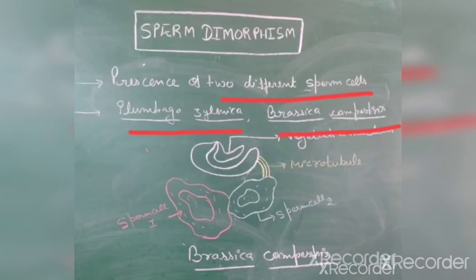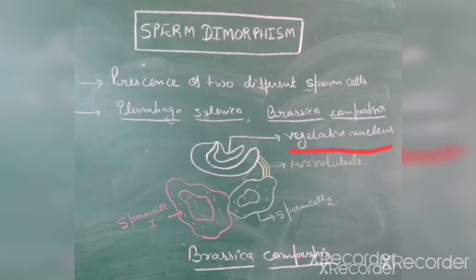In Brassica campestris, the male germ unit is present. This male germ unit comprises two unequal sperm cells — sperm cell 1 and sperm cell 2 — and these are joined to the vegetative cell with the help of microtubules.